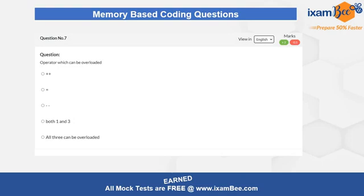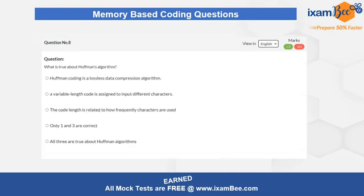Question number seven is related to the operator that can be overloaded. We know that operators can be overloaded and functions can be overloaded. All those operators which can be overloaded are important because they play different roles in different areas. You should know which operators can be overloaded and which cannot — this question gives you an idea about operator overloading.